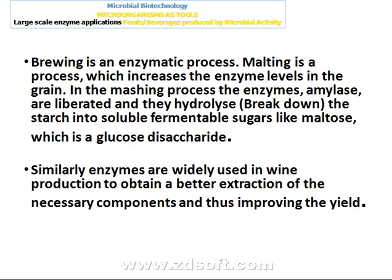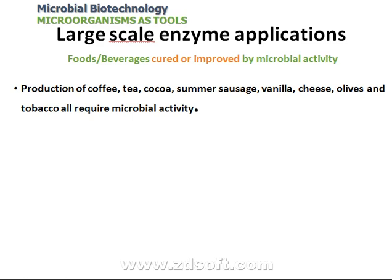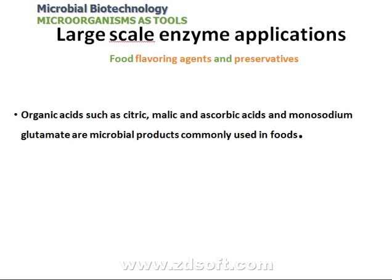Brewing is an enzymatic process. Malting is a process which increases the enzyme level in the grain. In the mashing process, the enzyme amylase is liberated and it hydrolyzes the starch into soluble fermentable sugar like maltose, which is a glucose disaccharide. Similarly, enzymes are widely used in wine production. Other food and beverage applications include coffee, tea, cocoa, summer sausage, vanilla, cheese, olives, and tobacco — all requiring microbial activity. Organic acids such as citric, malic, and ascorbic acid and monosodium glutamate are microbial products commonly used in food.